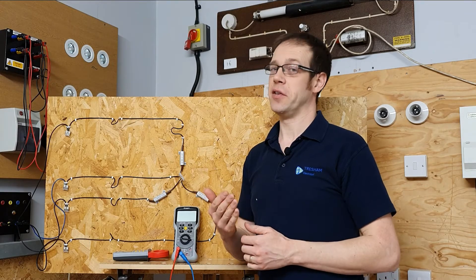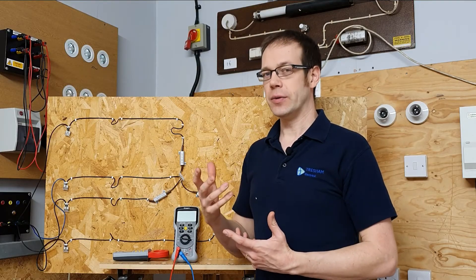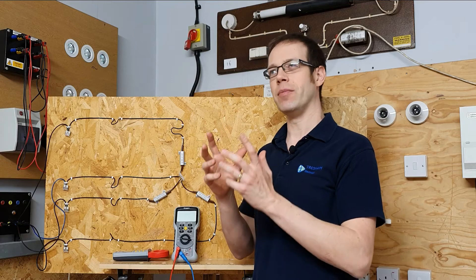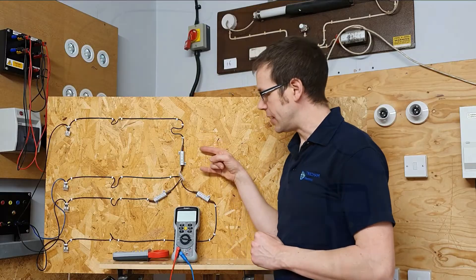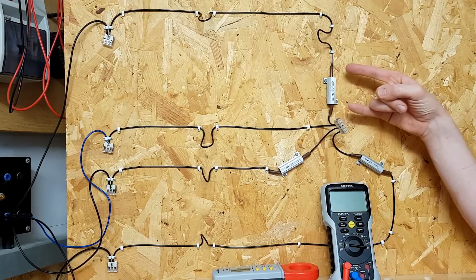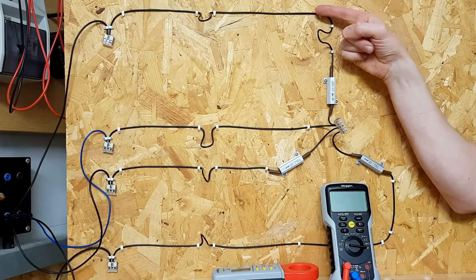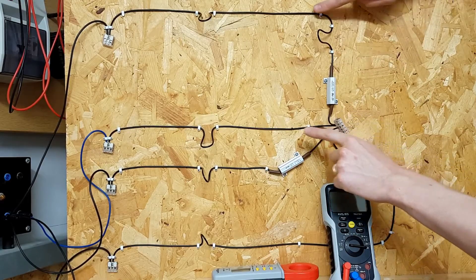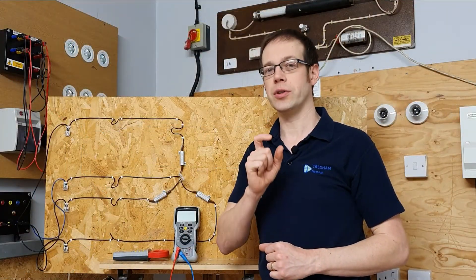The way I define phase voltage might seem a little odd at first, but it helps us understand how the same definition applies to both star and delta. Phase voltage is the voltage measured across the load. In a star connected system that's basically the same as measuring between any one of the lines and the neutral conductor, so we'll think of phase voltage as being the voltage across the load.